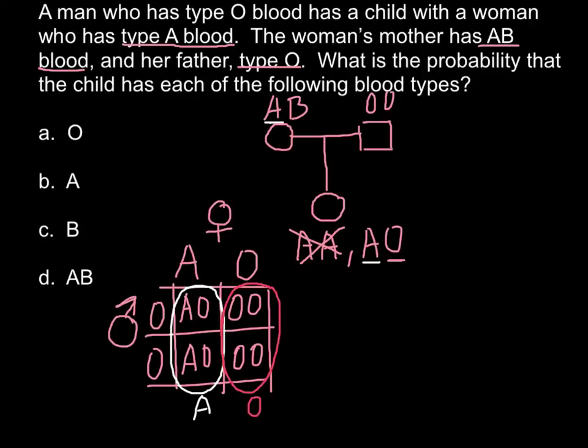So, blood group O would be one half chance or 50%. Blood group A would be one half chance or 50%. And blood group B would be 0%. And AB also would be 0%.